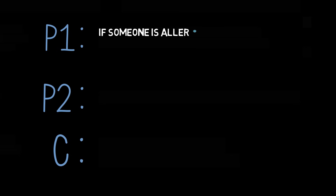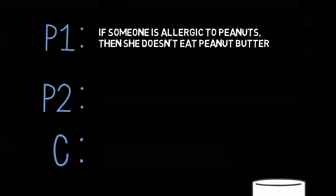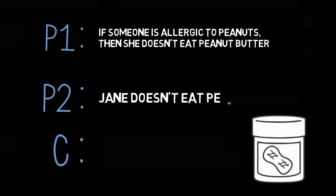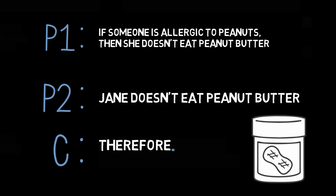First, consider the following arguments. Premise one: if someone is allergic to peanuts, then she doesn't eat peanut butter. Premise two: Jane doesn't eat peanut butter. Therefore, Jane is allergic to peanuts.